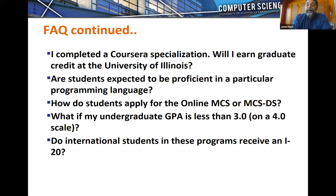Completing specializations does not give you any credit toward a University of Illinois degree. To get credit, you must be admitted to the MCS program and complete a four-credit class with all additional work including homeworks, projects, machine problems, and comprehensive examinations. Students are expected to be proficient in English. Most students know Python, and we expect graduate-level students to be able to pick up a new language within a few weeks. It's also helpful to be proficient in a production language like C++ or Java before taking your first graduate class.